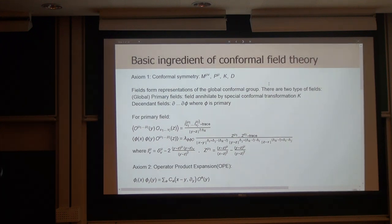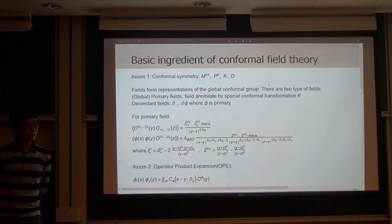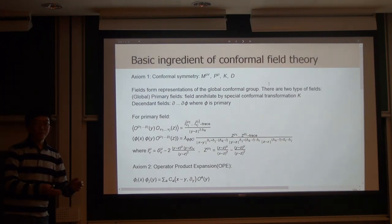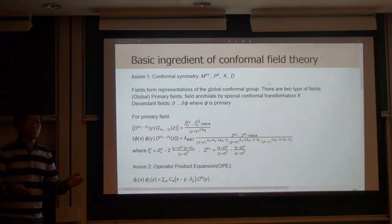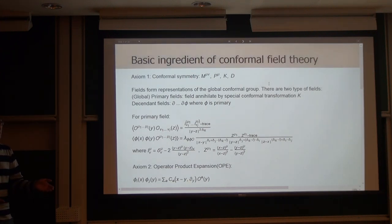A question: how do we know when we're talking about primary fields — that K acting on the field is zero? For example, in the last talk, he proposed Phi^n as a primary field. How do we verify that? In that case, you could argue via the equation of motion that it becomes a descendant — no longer the primary field for Phi cubed. But here, I'm not concerned about that logic. I just define the field which has this property.